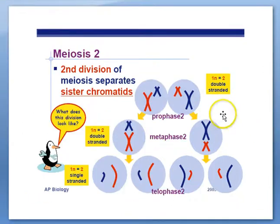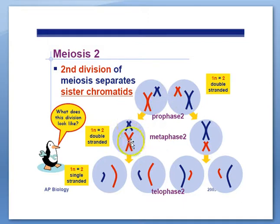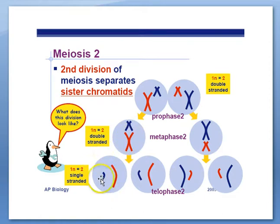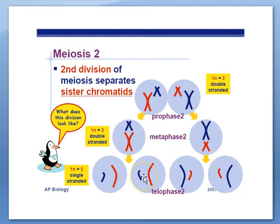During meiosis II, we also have a PMAT — prophase, metaphase, anaphase, and telophase. During metaphase II, the chromosomes line up in a straight line, just like mitosis. Then during anaphase II, the sister chromatids separate. At the end of telophase II, we have our two new nuclei being made. Cytokinesis divides the cell in half, and now each cell has one of the sister chromatids that separated during anaphase.